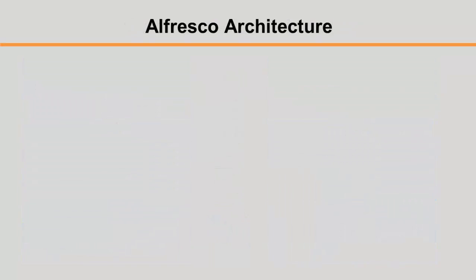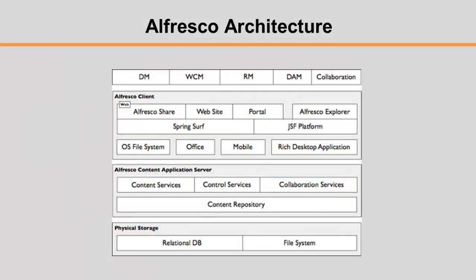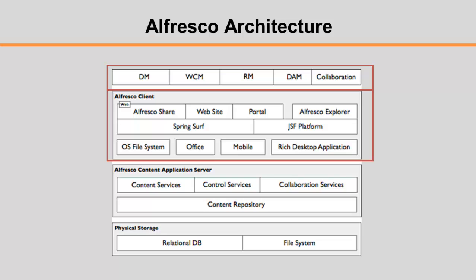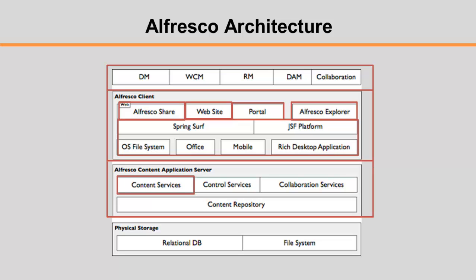There are many ways to slice and deploy Alfresco; however, most deployments follow a general pattern. Solutions commonly offer multiple clients against a shared server where each client is tailored for the environment in which it is used. Alfresco offers two primary web-based clients: Alfresco Explorer and Alfresco Share. The Alfresco content application server comprises a content repository and value-added services for content control and collaboration. The two standards that define the content repository are CMIS and JCR. These standards provide a specification for content definition and storage, content retrieval, versioning, and permissions.